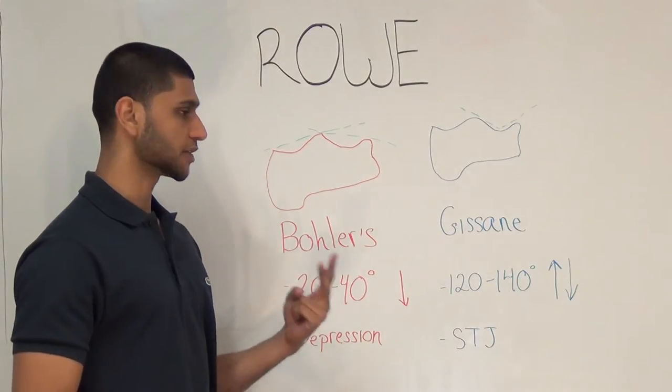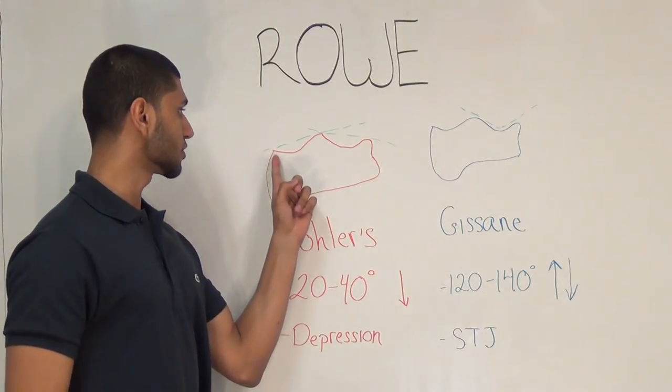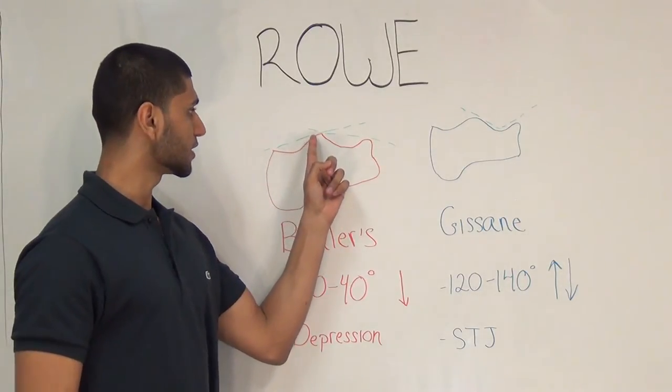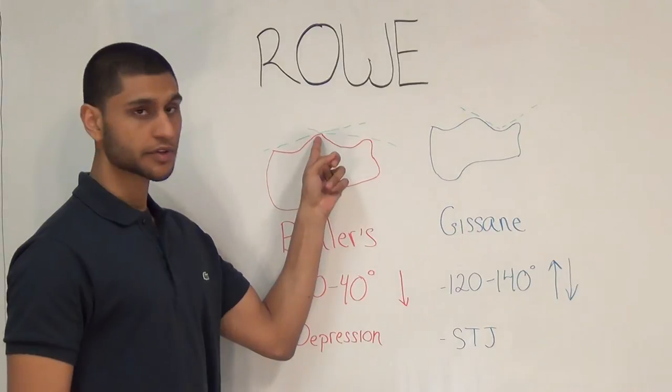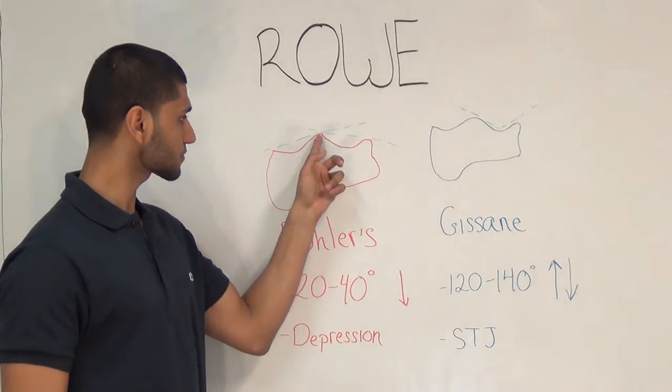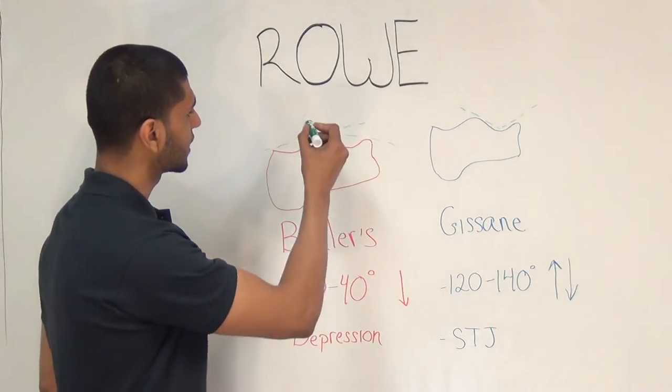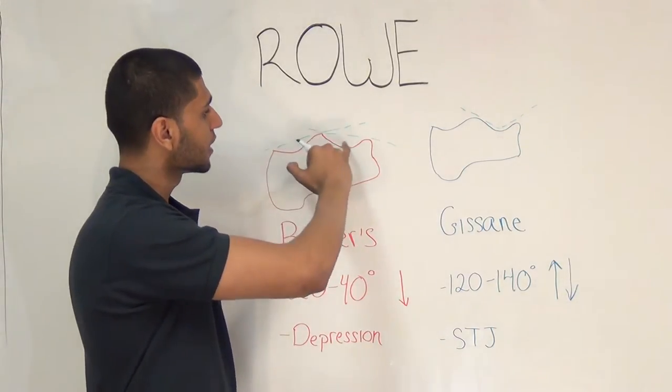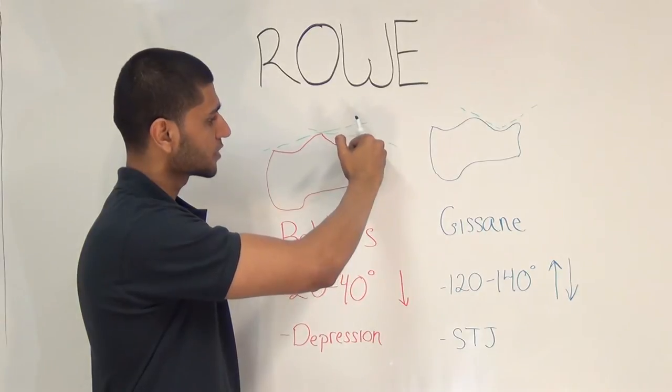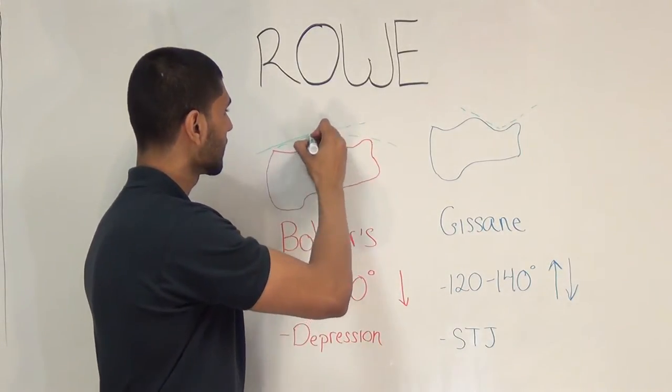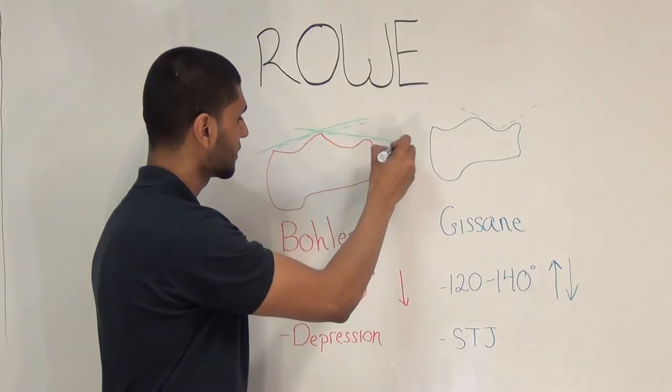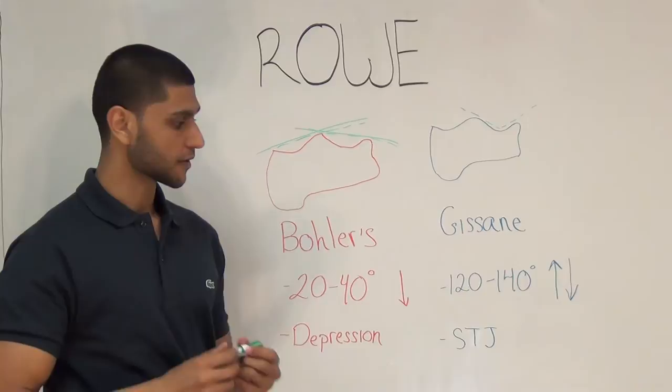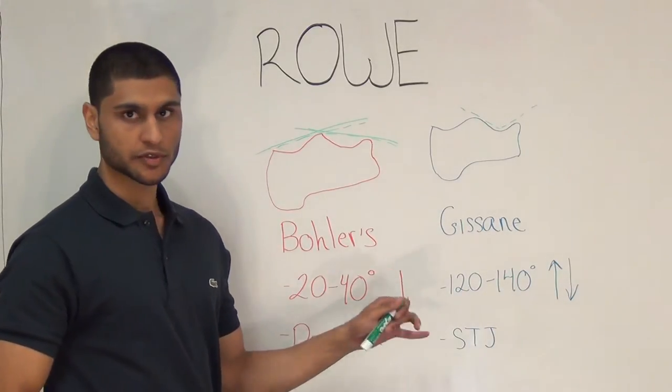Bohler's angle is formed by two lines. The first line begins at the most superior aspect of the calcaneal tuberosity and then goes to the most superior aspect of the posterior subtalar facet. The second line begins at the most superior aspect of the posterior subtalar facet and goes to the most superior aspect of the anterior process. Normally, this should be between 20 and 40 degrees. During a calcaneal fracture, this can decrease or even reverse.